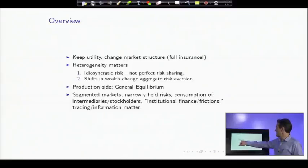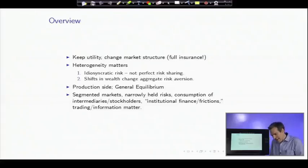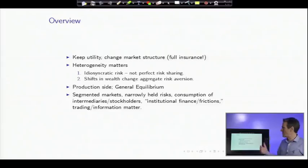I showed you two examples, idiosyncratic risk, the idea that we each get risks that aren't insured in asset markets, and how that can interact with non-linearity of utility functions to produce aggregate effect. I also showed you how, even if people are perfectly insured, different utility functions, changes in wealth across people with different utility functions, can produce the effect that we're looking at.